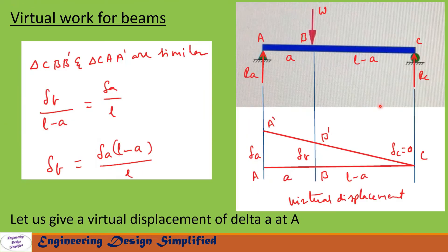In the previous slide we found Rc. Now to find reaction at A, Ra, let us apply a virtual displacement of delta_a at A. The beam assumes the position C, B-prime, and A-prime. Here also we form two similar triangles: C-B-B-prime and C-A-A-prime. Displacement at A is delta_a and displacement at B is delta_b. The distance from A to B is a and from B to C is L minus a.